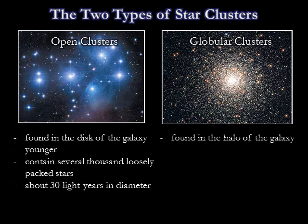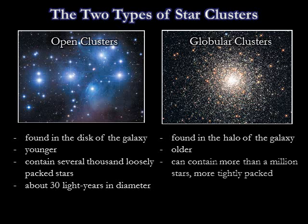Globular clusters are found in the halo of the galaxy, and their stars are among the oldest in the universe. A globular cluster can contain more than one million stars concentrated in the shape of a ball, typically from 60 to 150 light years across.